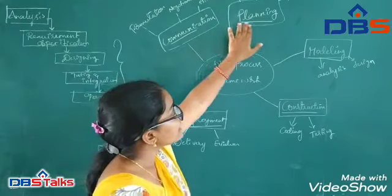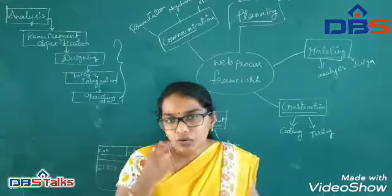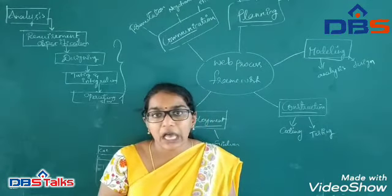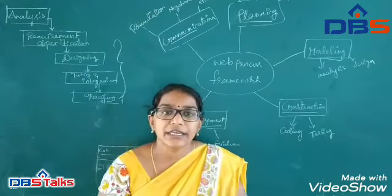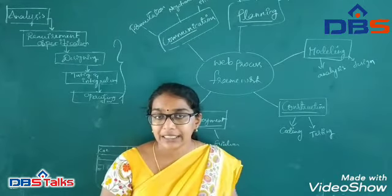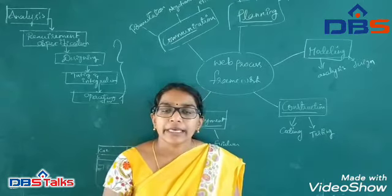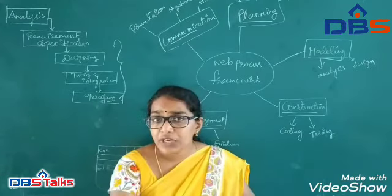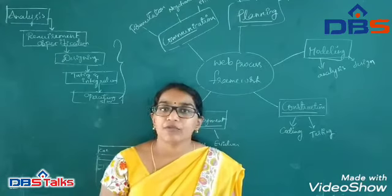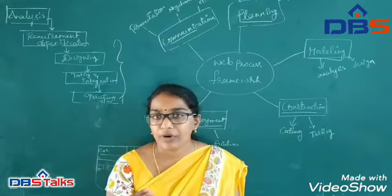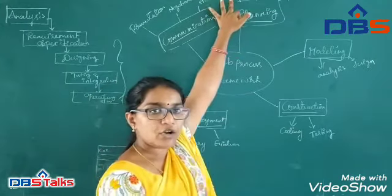The next one is planning. The phases in planning are: estimation, business analysis, and scheduling. Estimation is cost estimation — to develop a particular application, how much will it cost? From the communication phase, they have gathered requirements, and based on those requirements they estimate the cost. They determine how much cost is needed to fulfill those requirements, including the system resources required.